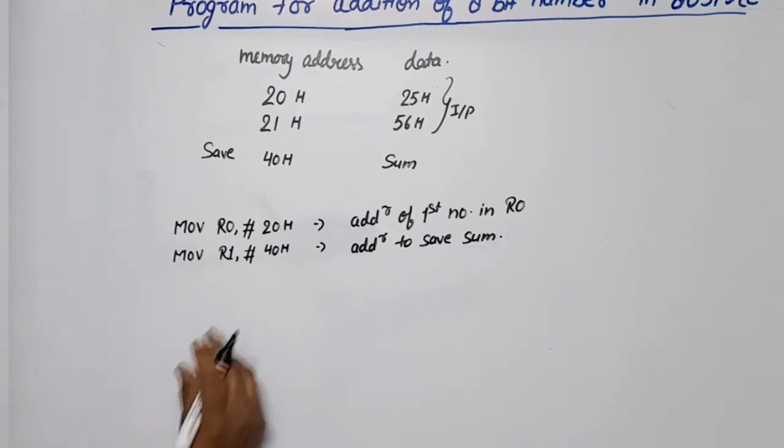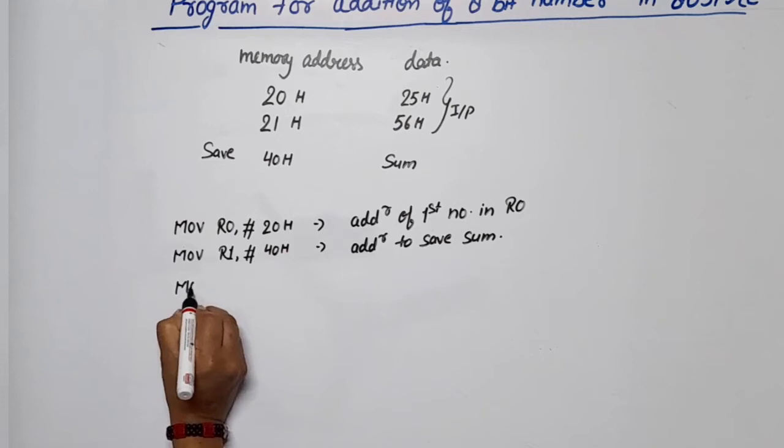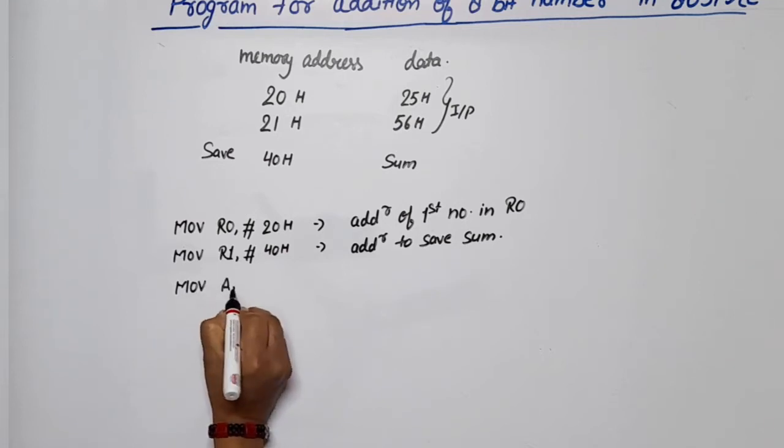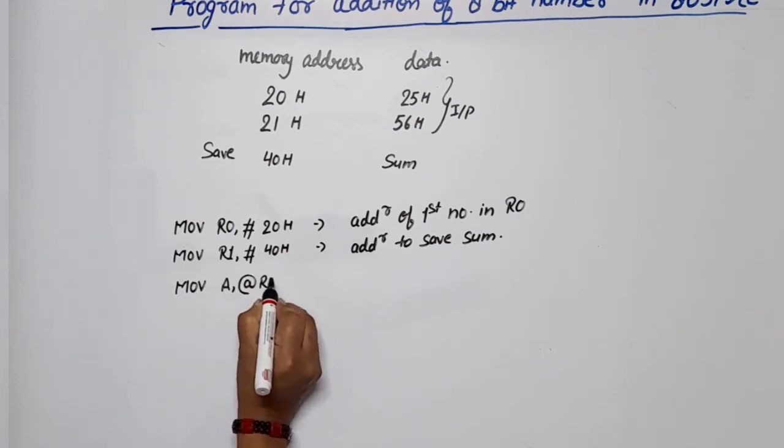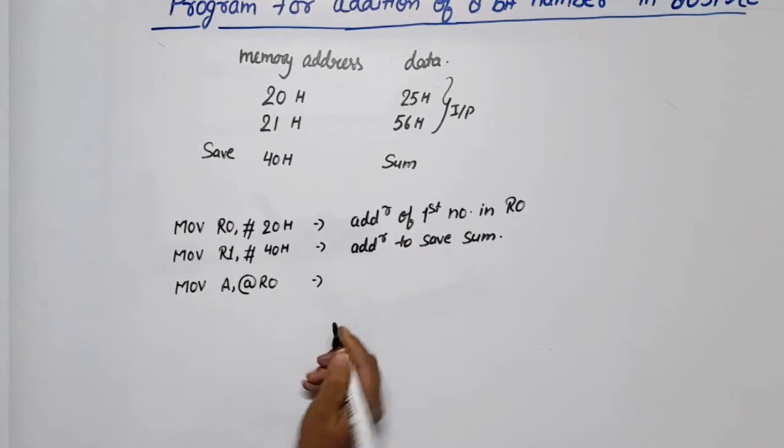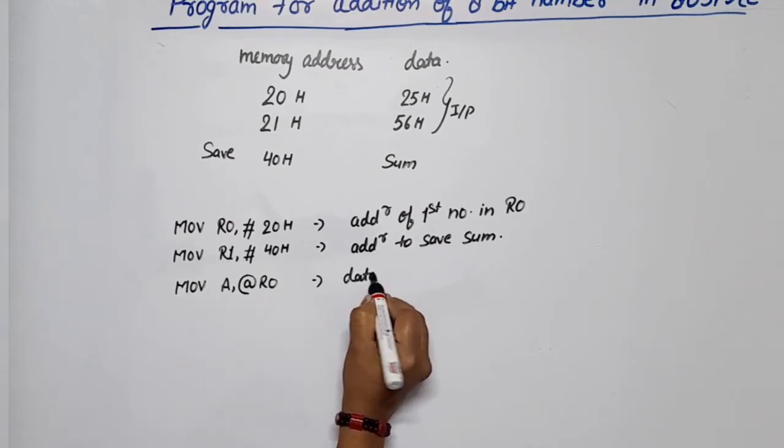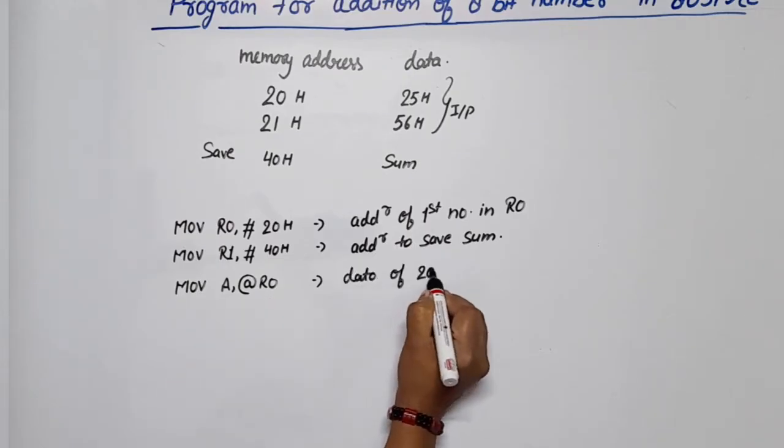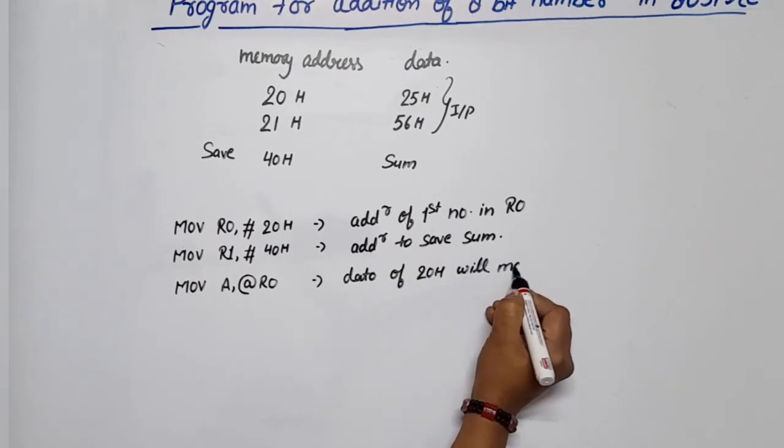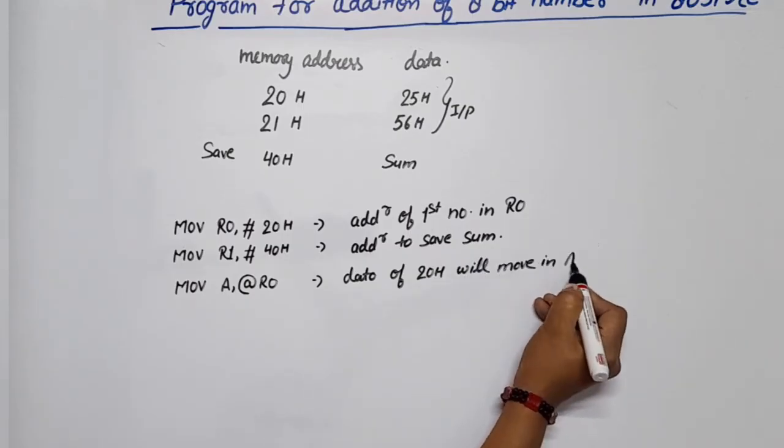Now we move the first number into the accumulator: MOV A, @R0. This means the data at address 20H will move into the accumulator.